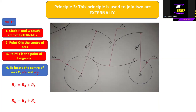When you have a problem like this, you cannot use a French curve to produce this arc freehand — if you do that, you will be penalized. It is expected of you to find this center O clearly, as the question will state that you must show the center of the arc and the point of tangency, both of which carry marks. So we must determine the values of rP and rQ. Remember that circles P and Q are touching this arc externally.